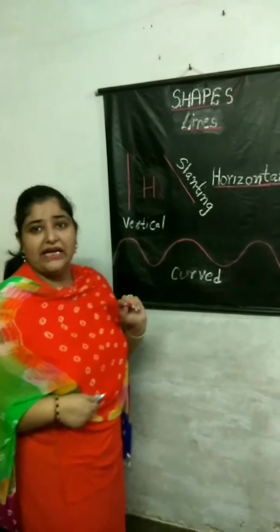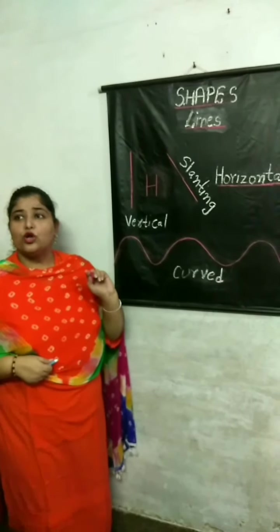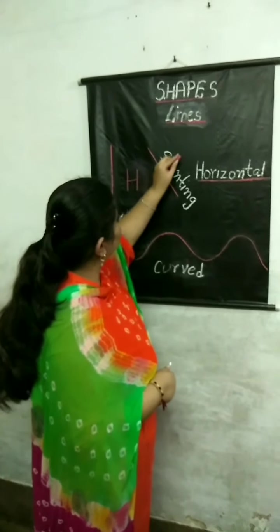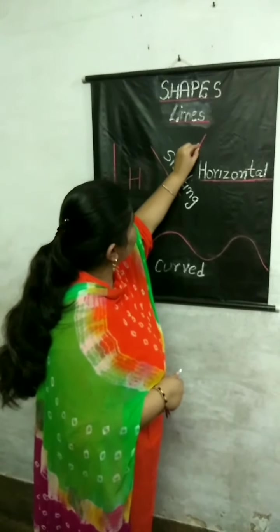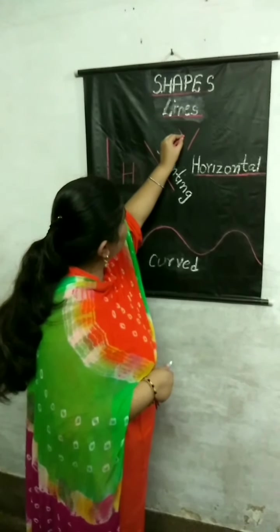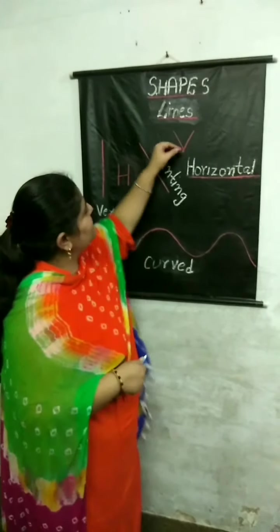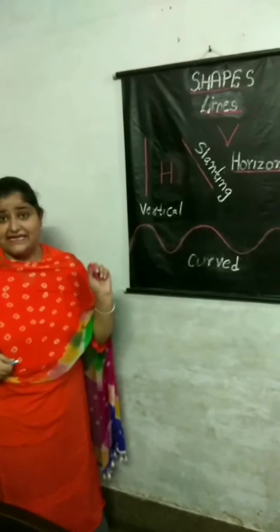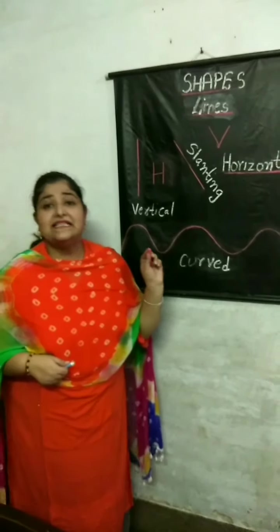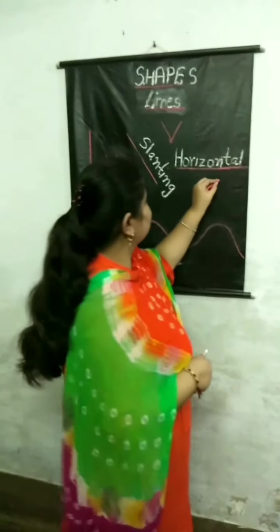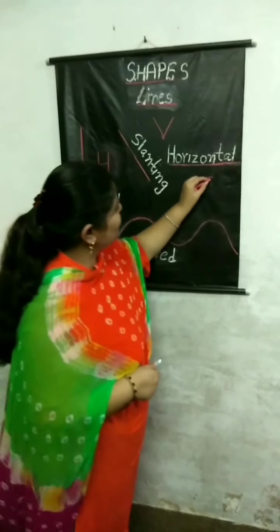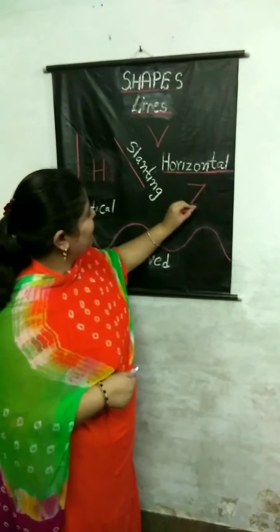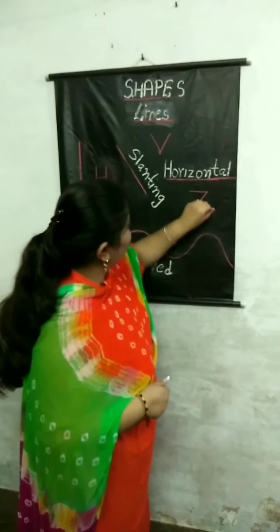In the same way, if you have to write the alphabet V, you will use the slanting line — one slanting line and another slanting line. And if you have to draw Z, you will use a sleeping line, then a slanting line, and again a sleeping line.